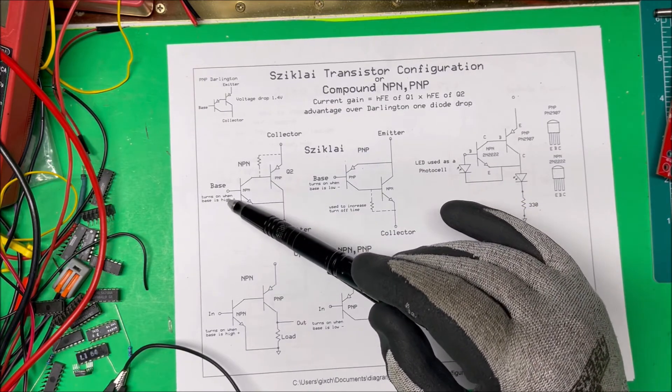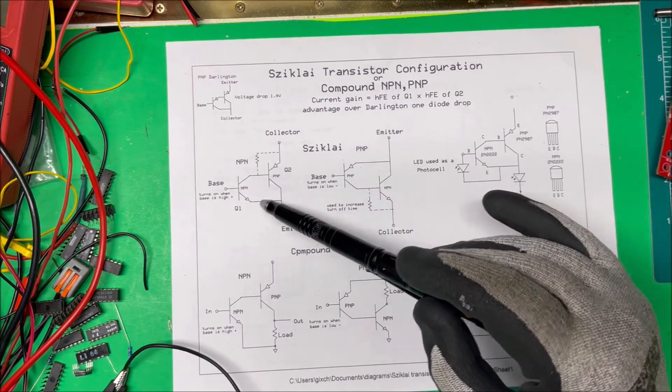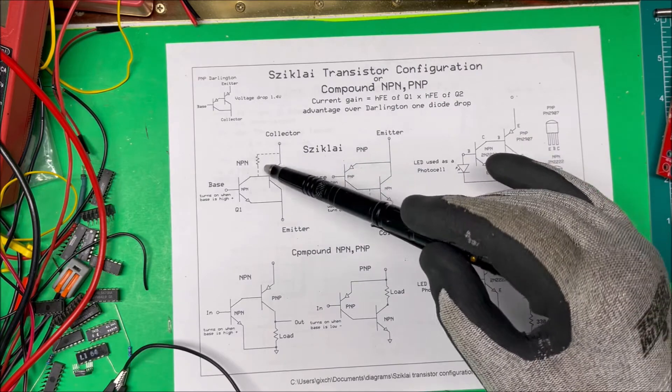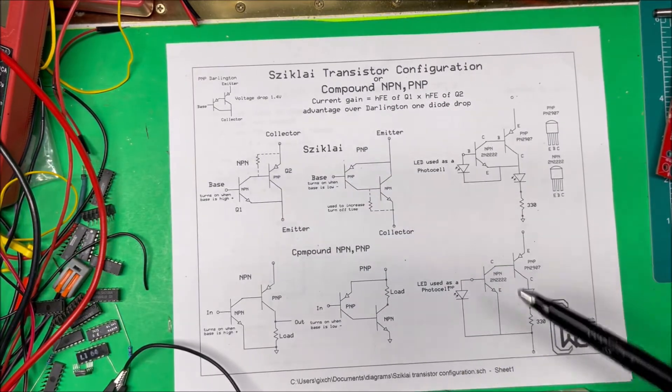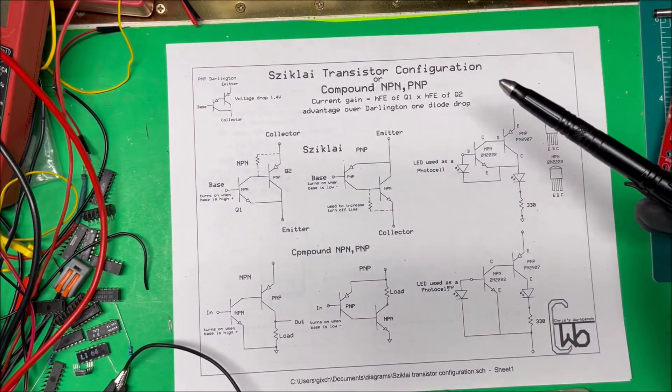In this case, when the base goes high here on the NPN, it pulls the base on the PNP low and turns it on. We have a collector, emitter, and a base here. It acts like a single transistor with a lot of gain, same gain as the Darlington.